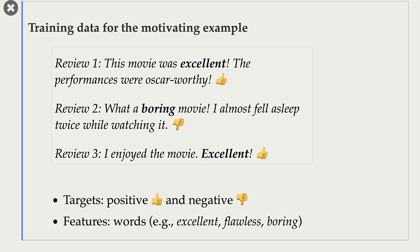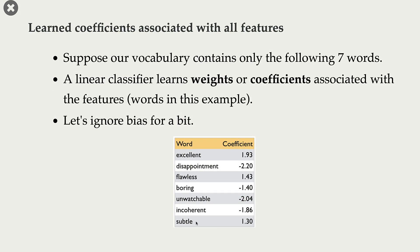What are the features? Our reviews come in raw text format, so we need to encode this data in some way. If we apply bag-of-words representation, then our features are going to be unique words from the vocabulary. Now, imagine that you have many such reviews and you train a logistic regression model on this dataset. You only consider seven words from your vocabulary, and these are the corresponding coefficients for these features learned by your model.